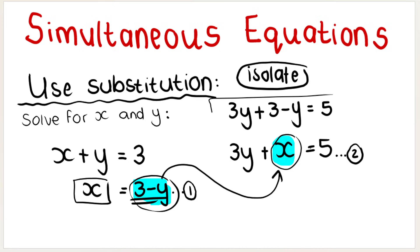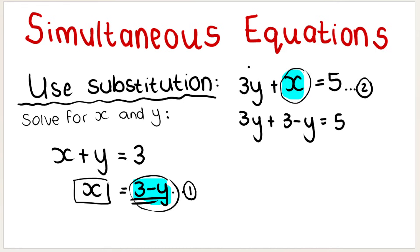Then we solve this equation. We get the Y's to one side. So three Y minus Y, and then we're going to have five inverse of plus three, it becomes minus three. So we've got two Y is equal to two, and then Y is equal to one.